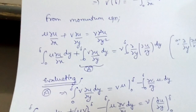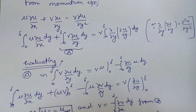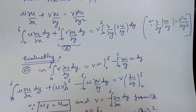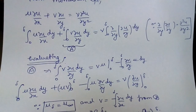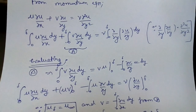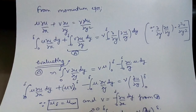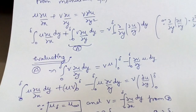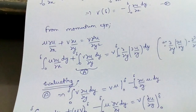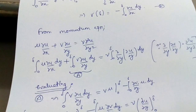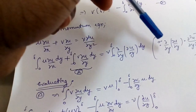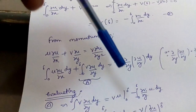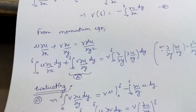Moving further, the momentum equation is: u del u by del x plus v del u by del y equals nu del² u by del y², where nu is the kinematic viscosity in m²/s. The pressure gradient term — minus (1/rho) del p by del x — is neglected in this derivation. Now integrating this with respect to y from 0 to delta: integral of u del u by del x dy plus integral of v del u by del y dy equals nu times del u by del y evaluated from 0 to delta.